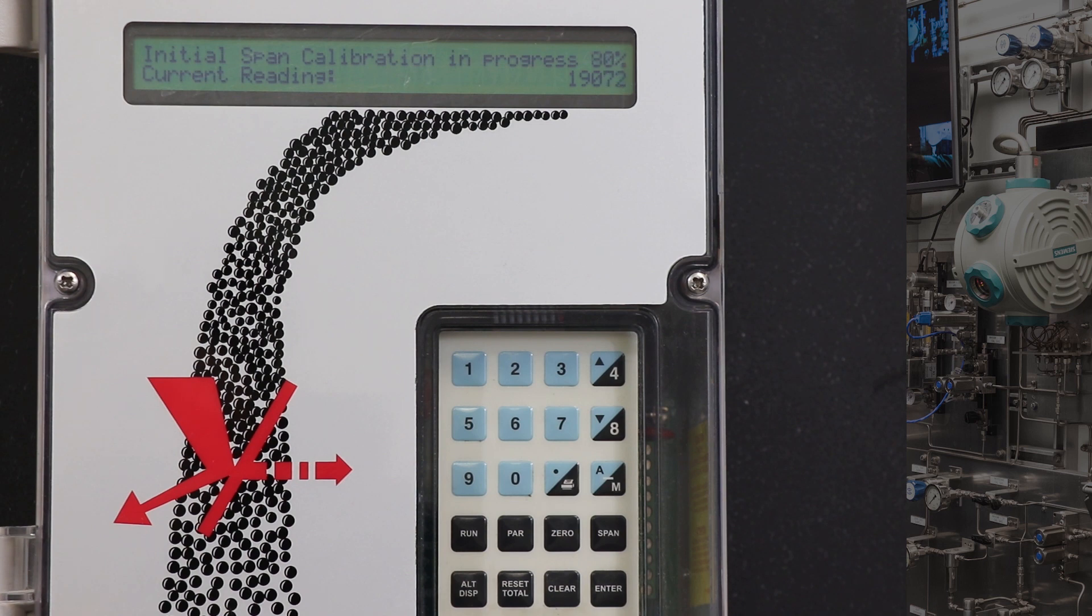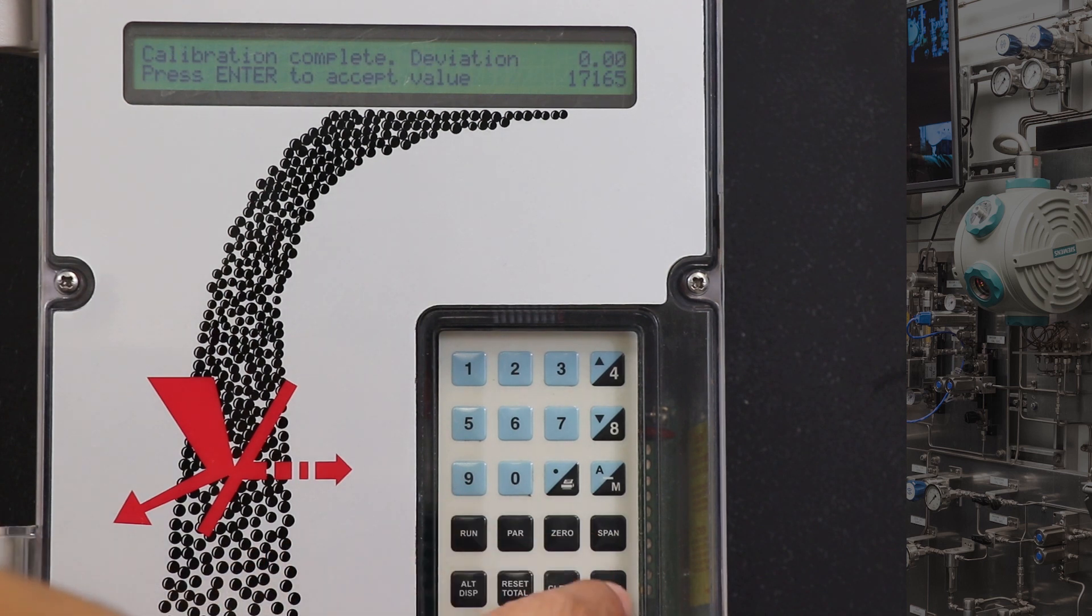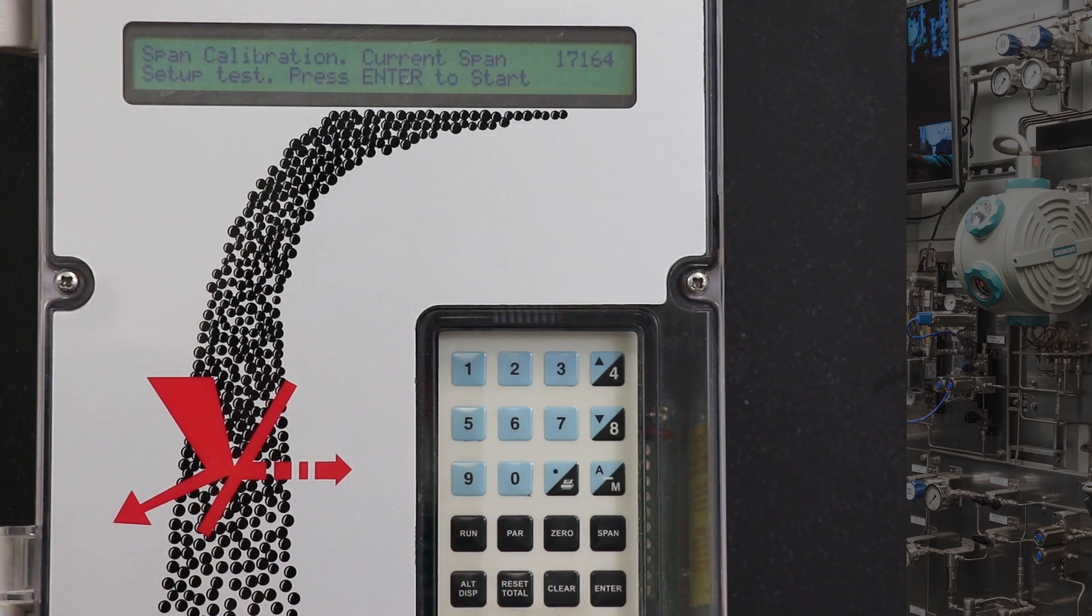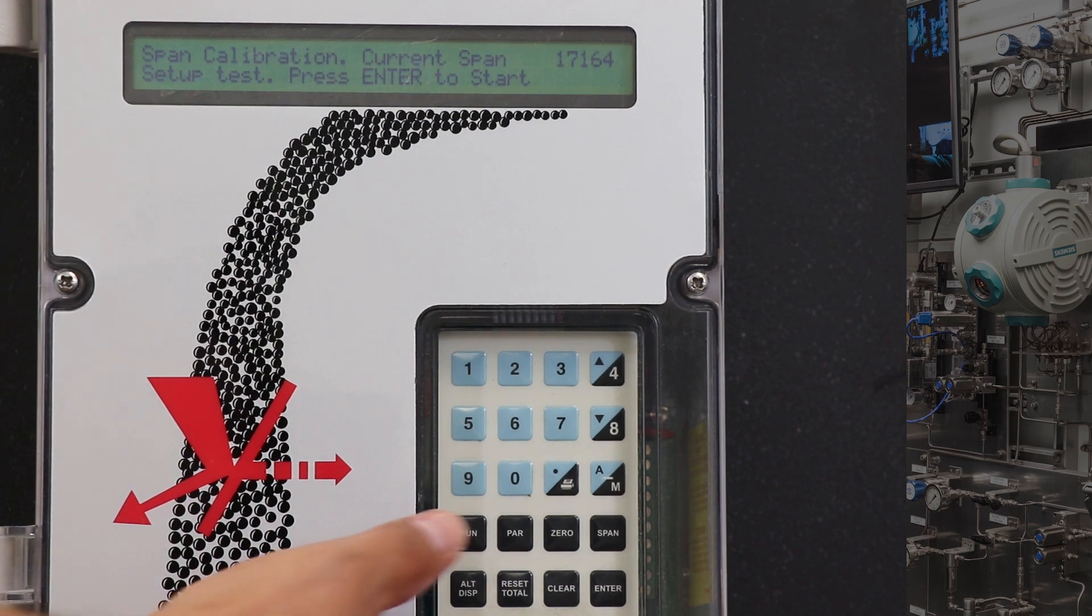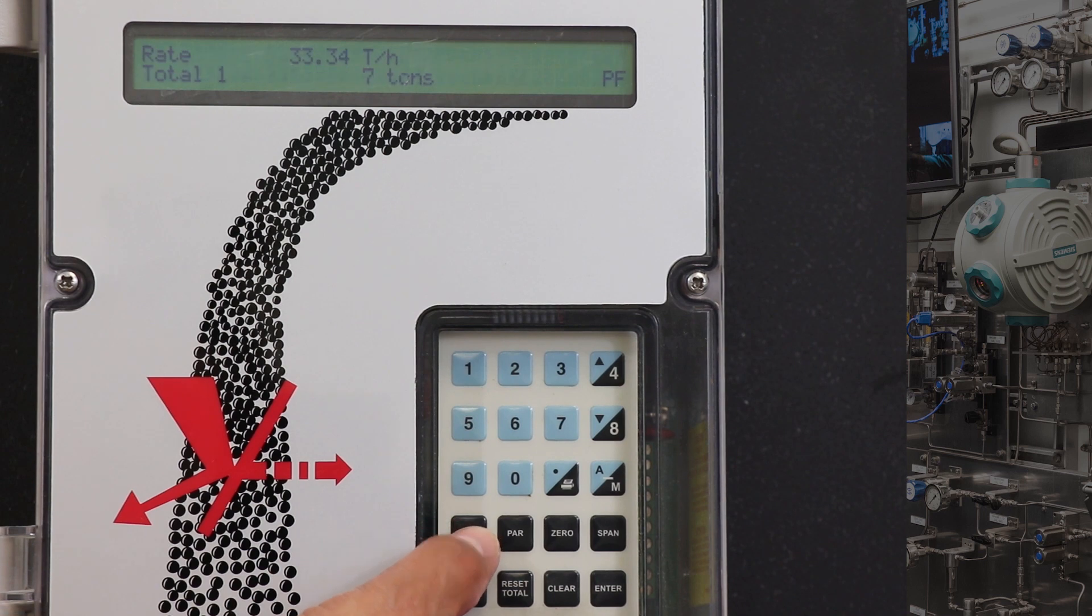Once the span calibration is complete, hit the enter button to set the span value. You can now go into the run mode by pushing the run button. Under rate, it should read what the test weight represents in tons per hour. Now remove the test weight and string and store them away.